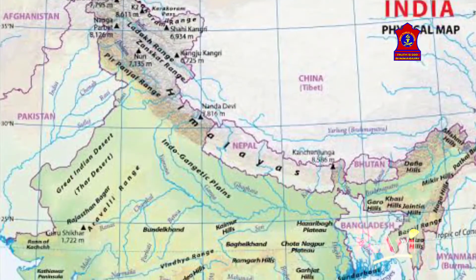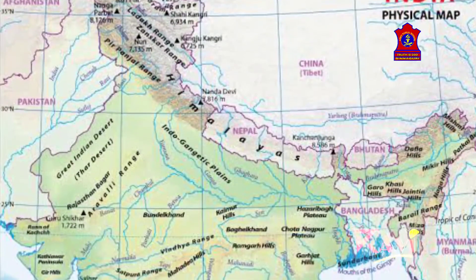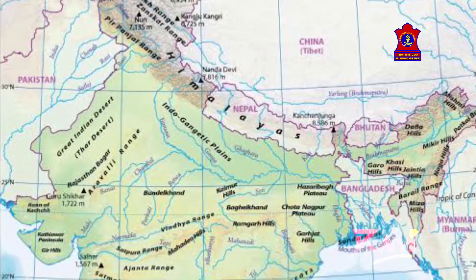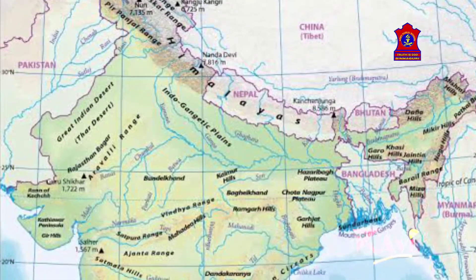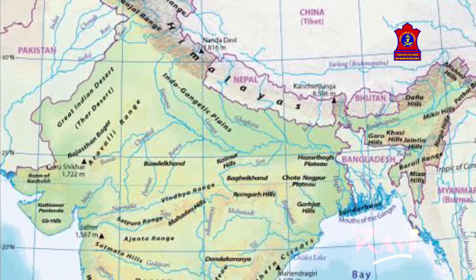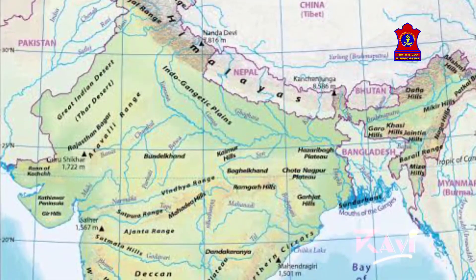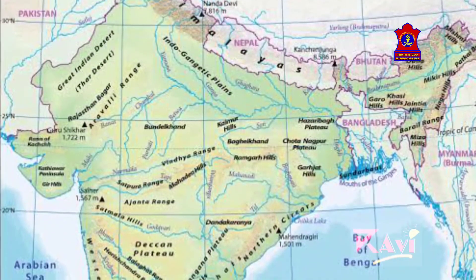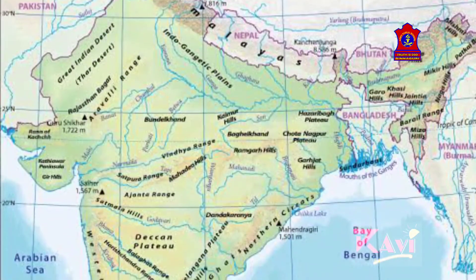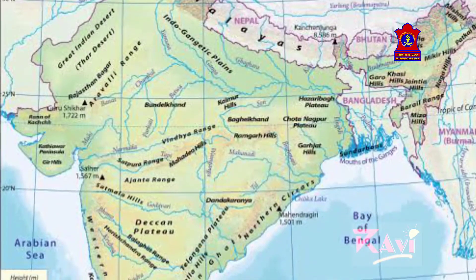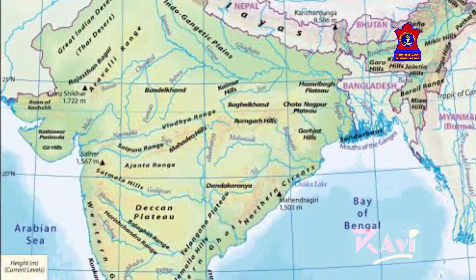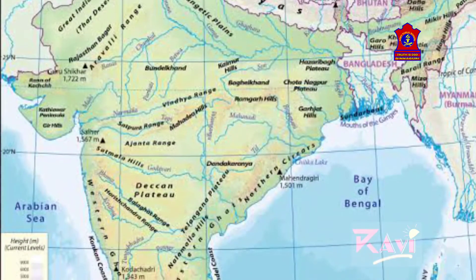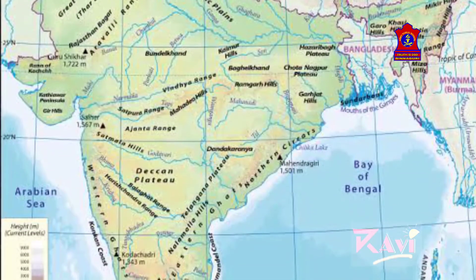Now let's learn about the physical divisions of India. Our country, India, has a peninsular shape. As we go towards the south of India, it is bound by the Arabian Sea in the west and the Bay of Bengal in the east. A peninsula is an area of land surrounded on three sides by water.